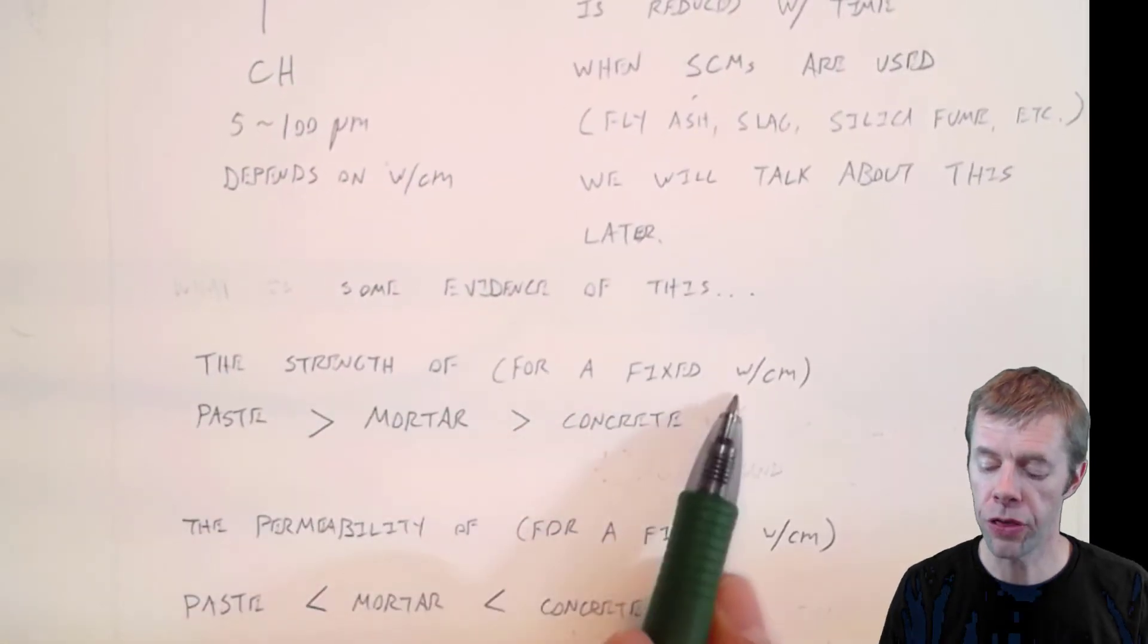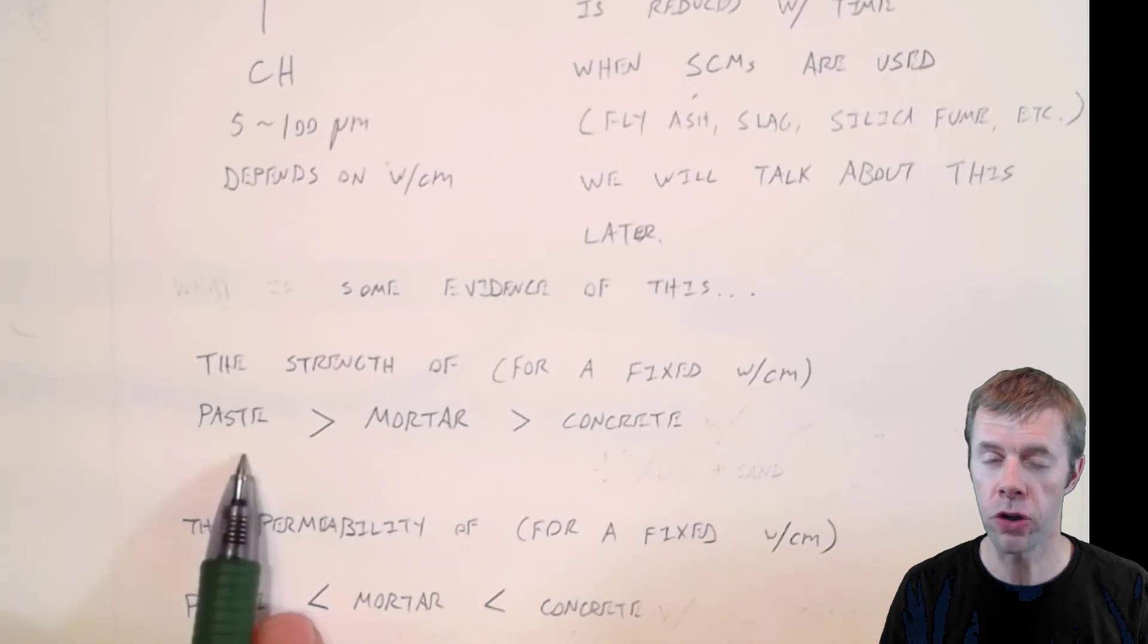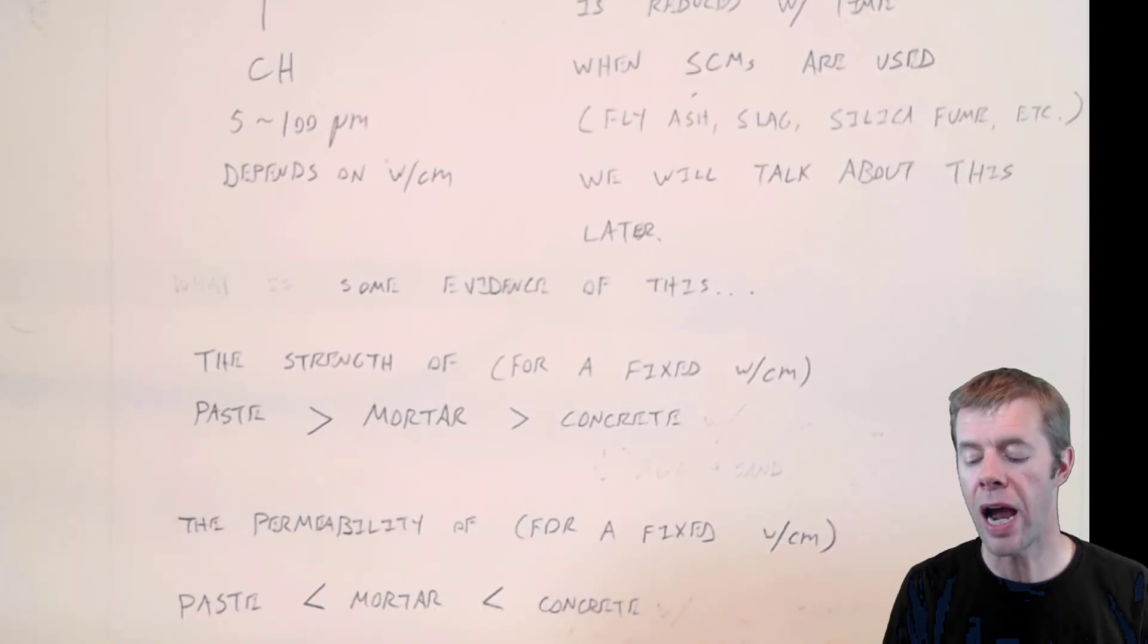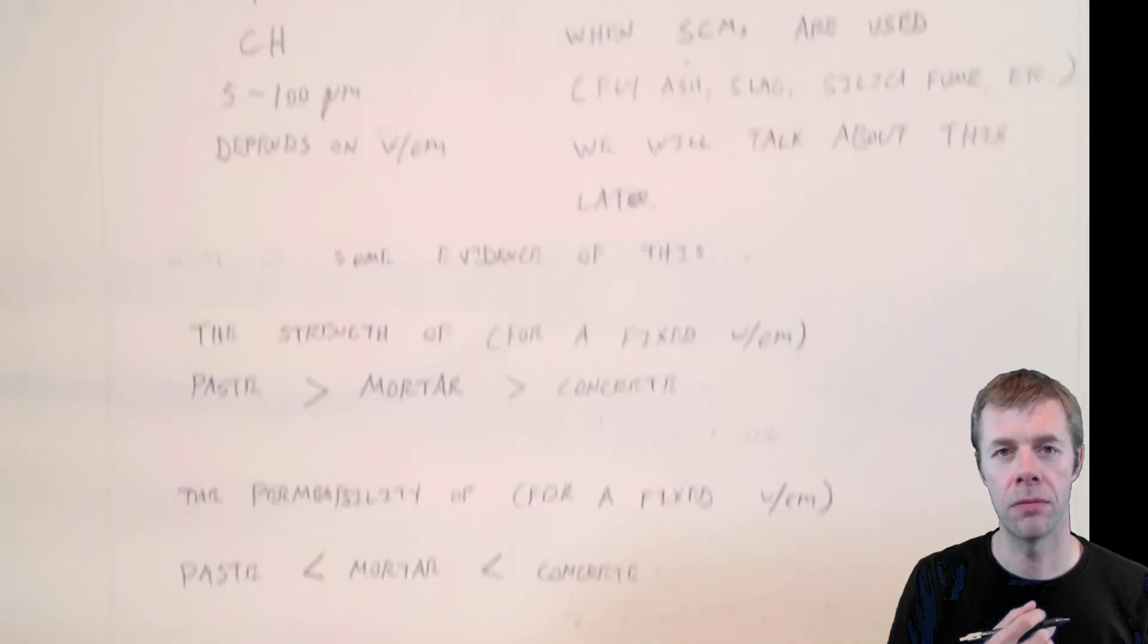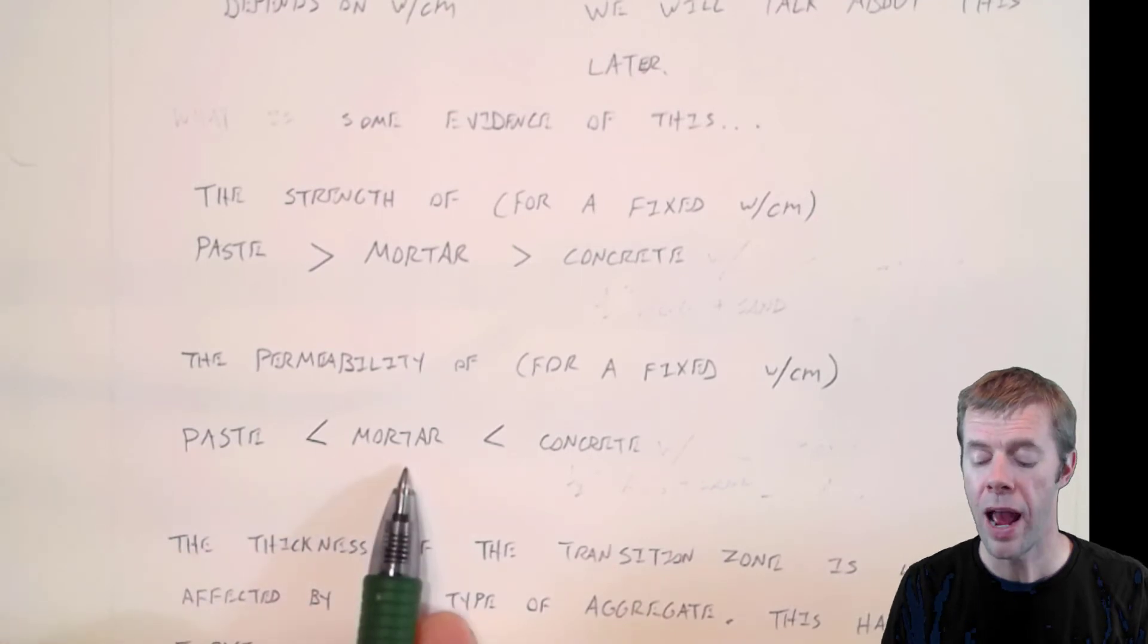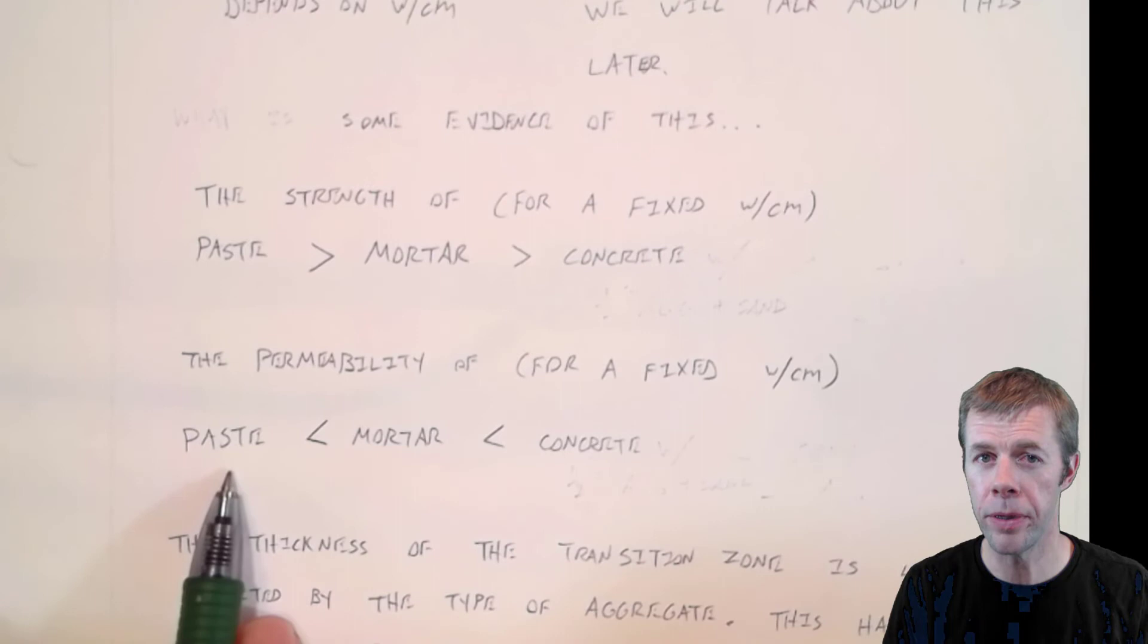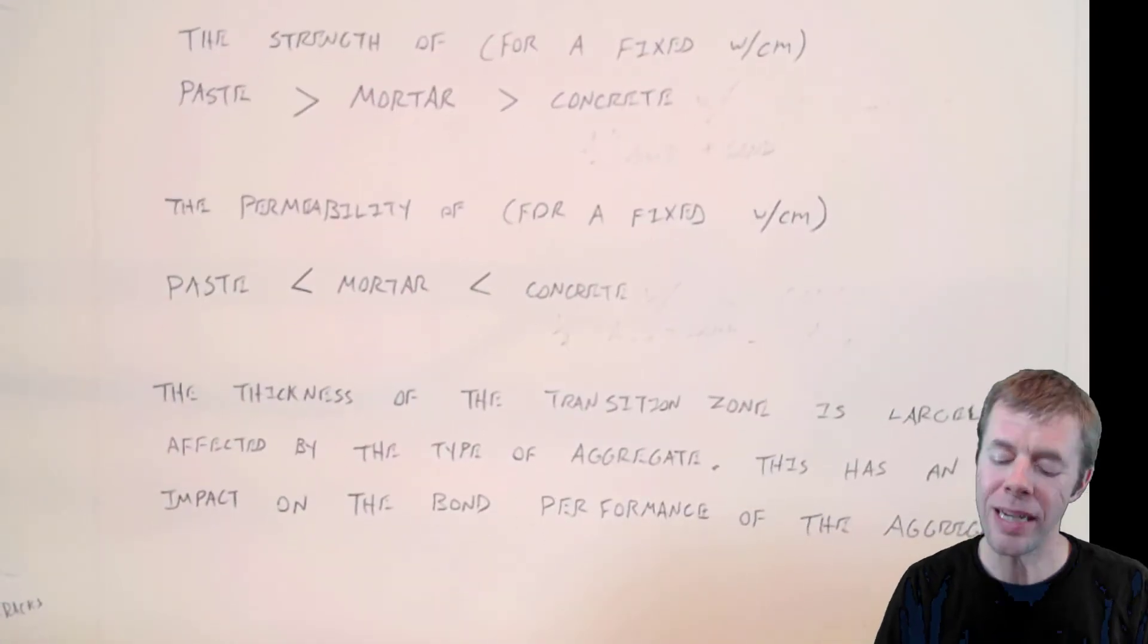But there's some evidence that this transition zone exists. For example, the strength for a fixed water-cement ratio. If I'm comparing the strength of a paste versus a mortar versus a concrete, the paste is going to be stronger than the mortar and the mortar is going to be stronger than the concrete. Why would that be? Well, by introducing aggregates, you're introducing these weak zones, these weak regions, that decrease the capacity. And if you look at the permeability or how easy it is for the outside water to penetrate into the concrete, outside fluids, the paste has the lowest permeability. That's good. And then mortar and then concrete. Mortar actually has a lower permeability than concrete and paste has a lower permeability than mortar.